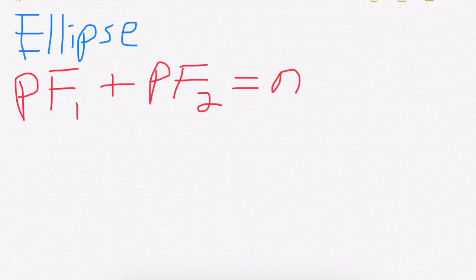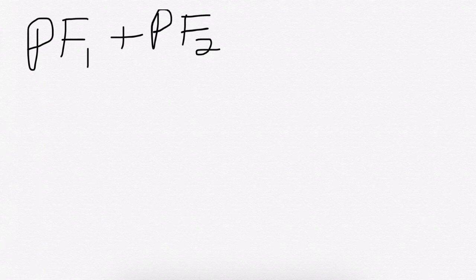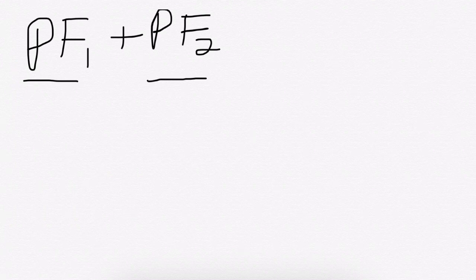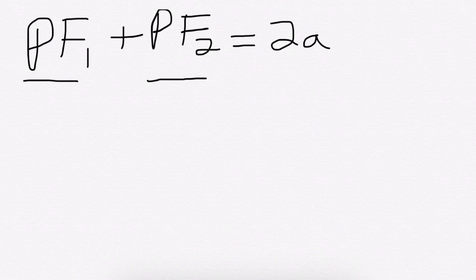We know that any point on the ellipse to its focus plus the distance from the point to the second focus is constant for the ellipse. We saw earlier that if you add the distance from the point to one focus plus the distance from the point to the second focus, we always get 2a, which is the length of the major axis.